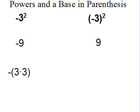In the second example, the base with the parentheses means that the actual base is the whole thing, negative 3. So negative 3 in parentheses to the second power is negative 3 times negative 3. And since the negative times the negative is positive, that's how we get positive 9.